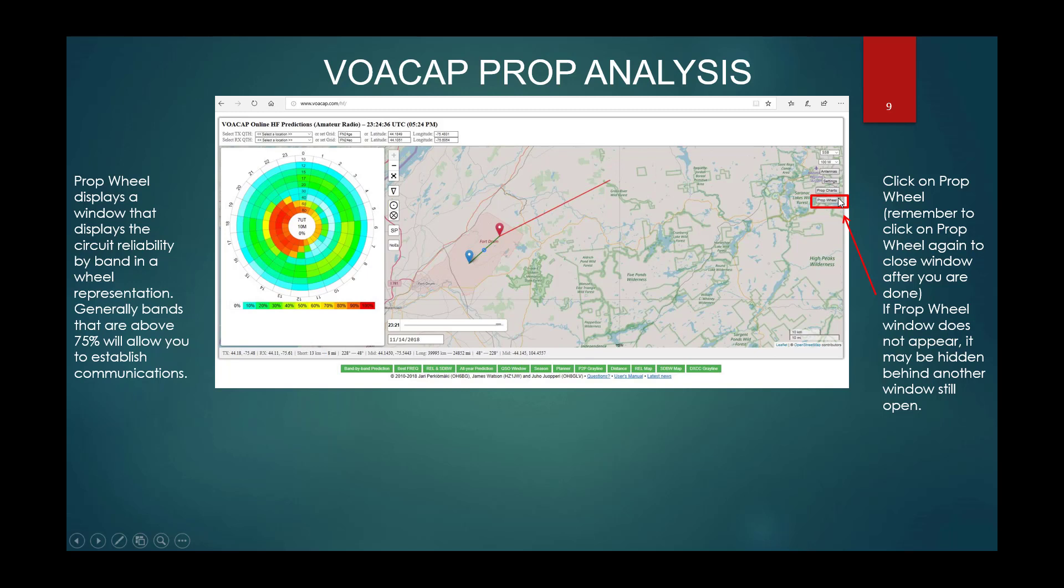Next, we want to click on the prop wheel. The prop wheel is another way to visualize your ability to communicate. How to read this. Concentrically around in a circle is the time of day and then emanating from the center is the bands. So we have the 10 meter band all the way at the outside, 12, 15, 17, 20, 30, 40, 60, and 80 meter bands. This is a much faster way to see time of day versus what band you need to be on to achieve at least 70% or above reliability. We can even say probably more around 75% and better. Click on prop wheel again and this dialog box will go away. If you click on anything else and it doesn't pop up immediately, that's because you have another dialog box already open and you need to close that back out by again clicking on these buttons.